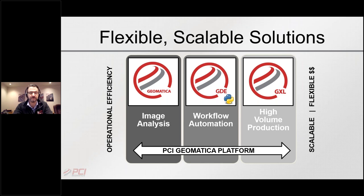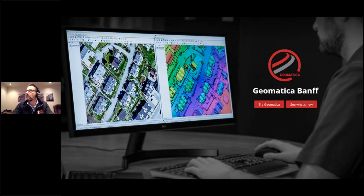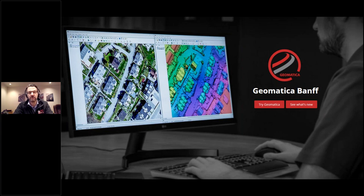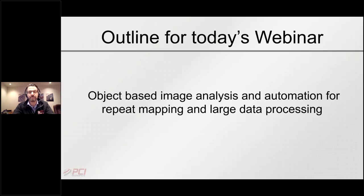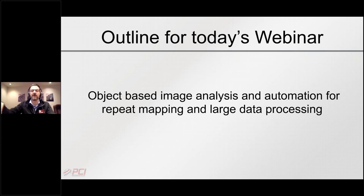Last Tuesday we introduced Geomatica's latest version, codename Banff. It's a major software release — about a year since our last major update — with a lot of really interesting new capabilities. Today we're focusing on one of those: automation within Object Analyst, which allows you to do repeat mapping over similar areas or process large geographically dispersed datasets.